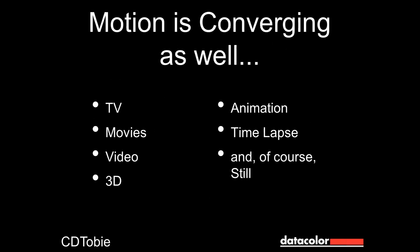Motion is converging. In Los Angeles, TV, movie, and video industries no longer use separate rental and sales houses — much the same equipment is used everywhere. 3D filmmaking and animation are merging with traditional video, and all of these can be done much more affordably now. Time lapse, done with still cameras, also ends up as video when you're finished. All of this is possible with affordable equipment and the same cameras that shoot stills.